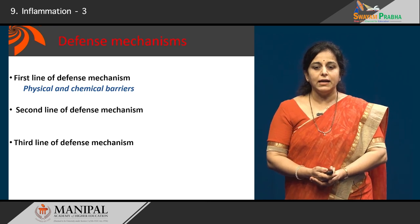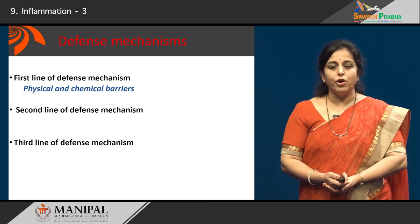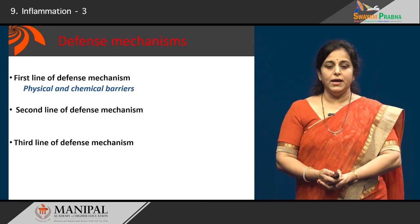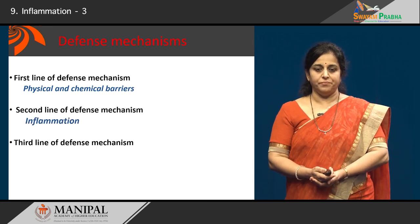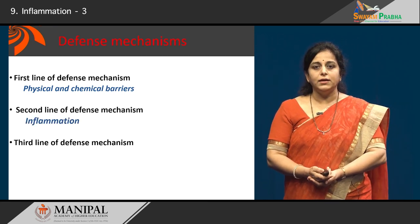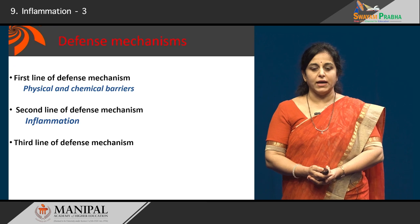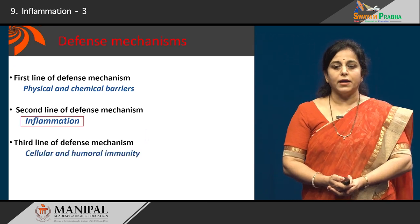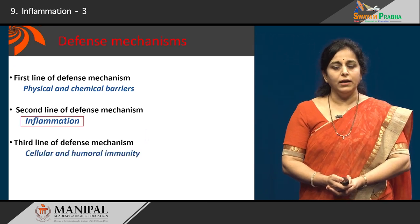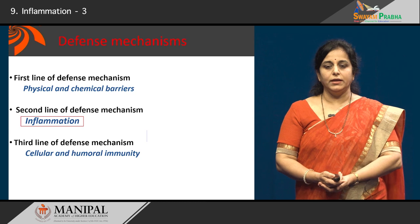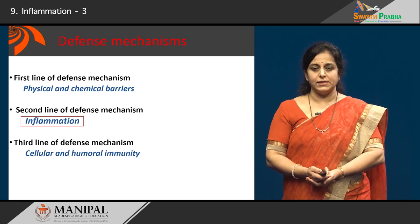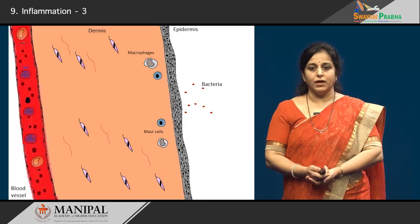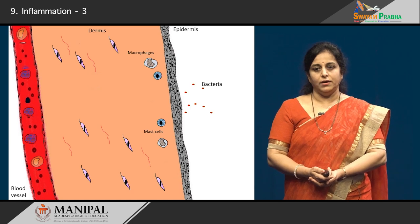The second line of defense mechanism is what we are going to learn in detail today — this is inflammation. The third line of defense mechanism includes cellular and humoral immunity, that is the T and B lymphocytes. Let us learn about inflammation today.